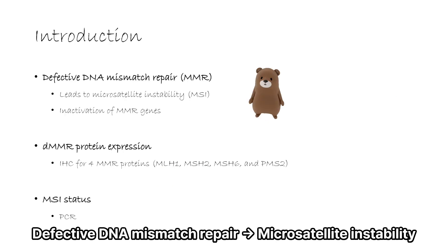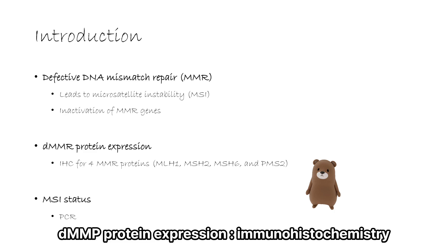Defective DNA mismatch repair causes changes in the length of repeated sequences, a molecular phenomenon known as MSI. Expression of these dMMR proteins is usually assessed by immunohistochemistry for the four MMR proteins MLH1, MSH2, MSH6, and PMS2.